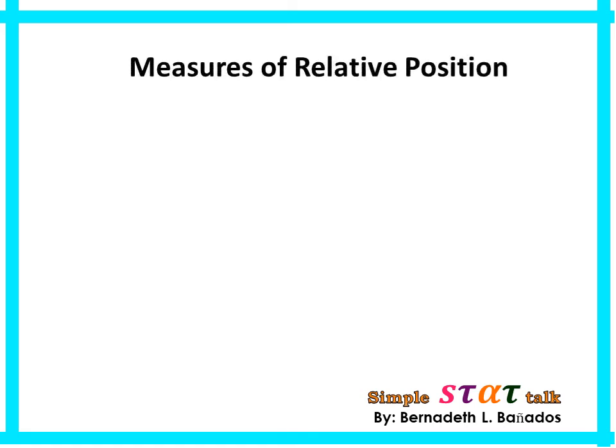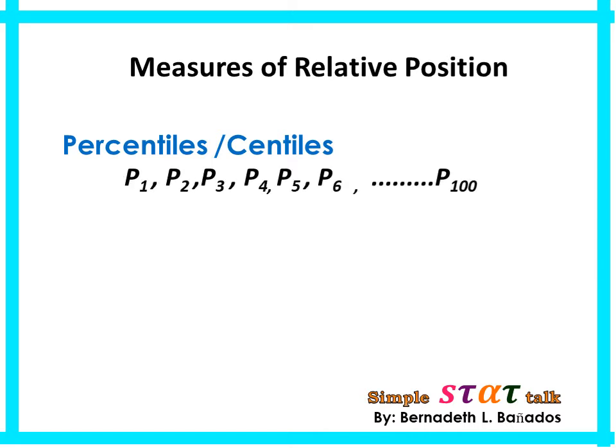Measures of relative position. In the previous lesson you learned that the median divides a data set into two equal parts. In this lesson we'll be talking about other measures wherein it divides the data set into 100 equal parts, and we call it percentiles or centiles. We use the capital letter P for percentile. So if we say P sub 1, that means the first percentile, and P sub 6 means the sixth percentile.